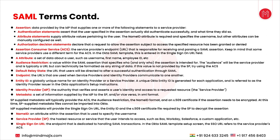Sometimes the audience restriction and the ACS URL are the same. If the audience restriction is not provided by the service provider, the ACS URL itself is treated as the audience restriction — but 90% of the time it has to be provided by the service provider. The Default Relay State is the URL that users will be directed to after a successful SAML authentication. Endpoints are the URLs used when the service provider and identity provider communicate with each other.